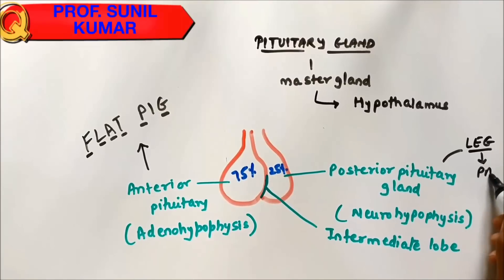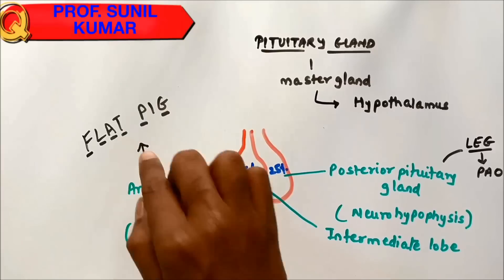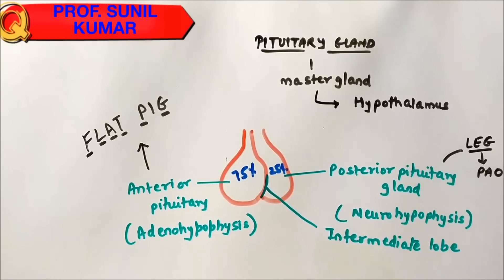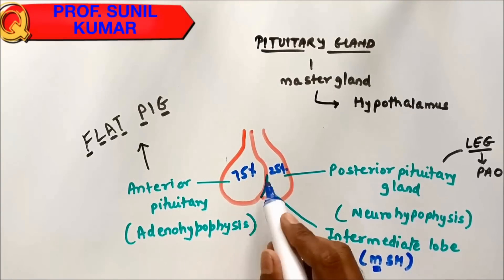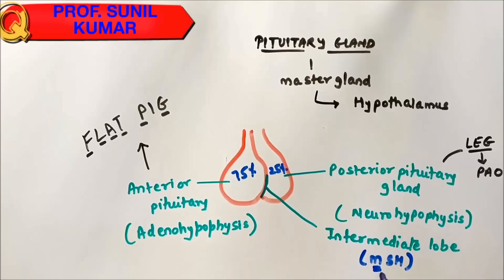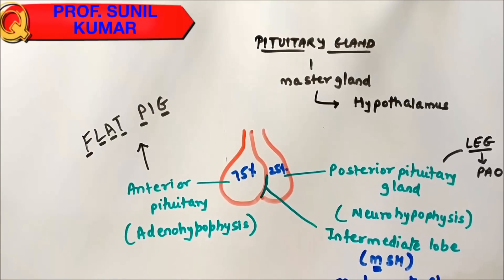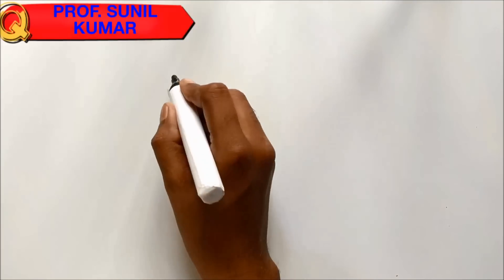LEG in Hindi is called 'pow'. The intermediate lobe secretes one hormone called MSH, that is melanocyte stimulating hormone. Melanocyte stimulating hormone is responsible for melanin pigment, which is not functional in the case of humans.